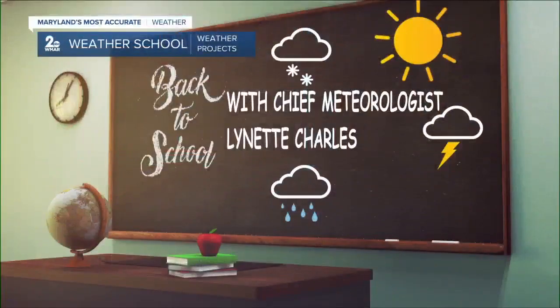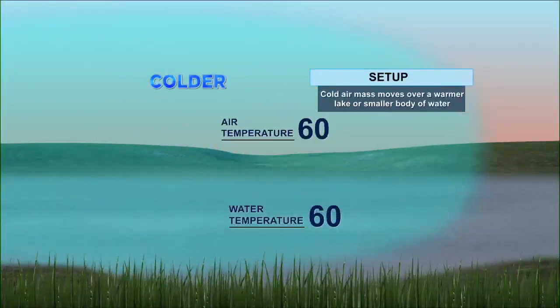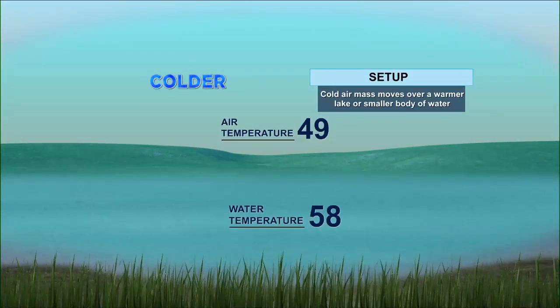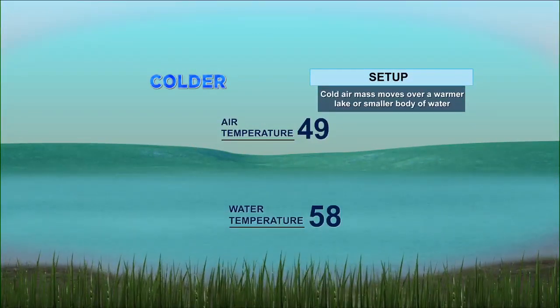Hello everyone, we're going back to school with Chief Meteorologist Lynette Charles today once again, and today the topic is fog. So we do have lots of fog to talk about. I'm going to talk about six categories of fog and then we'll start to see how it develops. You have to have moisture, you have to have the cool air, the warm air — but let's delve into it.